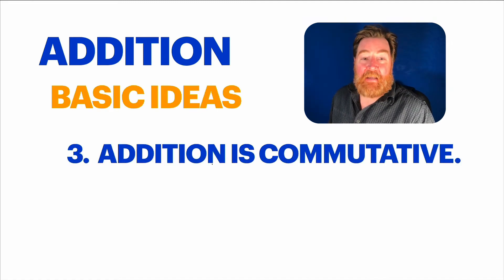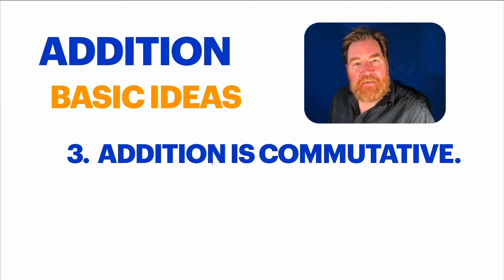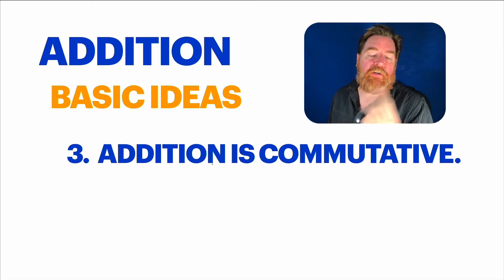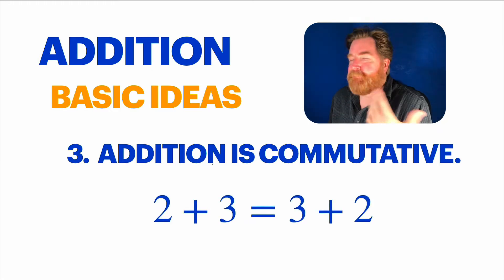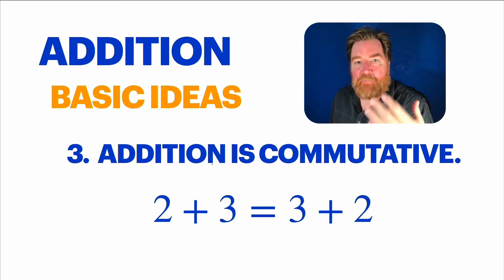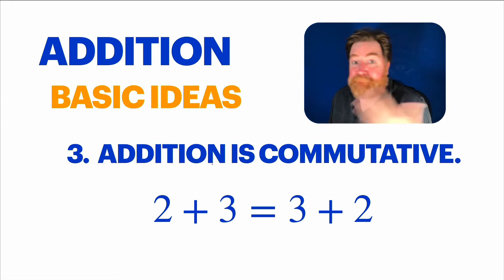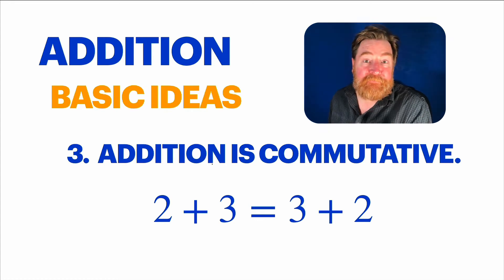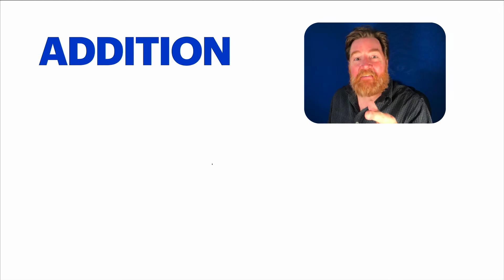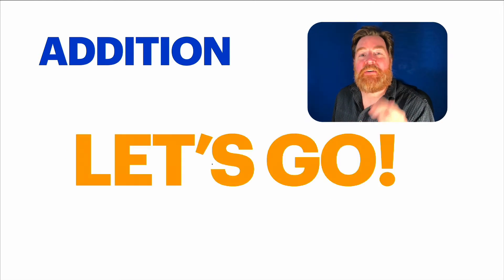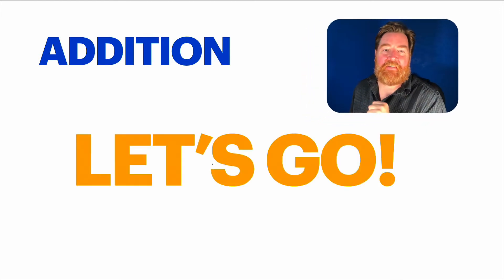Last big idea: addition is commutative, which means the order in which you add the numbers doesn't matter. Two plus three gives you exactly the same as three plus two — they're both five. Nothing to it. Let's do some addition.